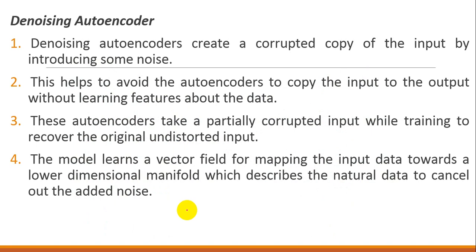Another one is the denoising autoencoder. We will see a regularization method which will restrict our autoencoder's input and output nodes. Point number one: the denoising autoencoder creates a corrupted copy of the input by introducing some noise. We will add a corrupted copy of the input nodes which will introduce noise. This helps to avoid the autoencoder copying the input to the output without learning features about the data.